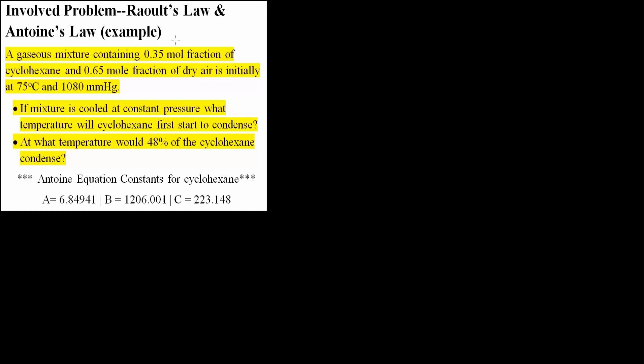In this video, we will be solving this problem right here. A gaseous mixture containing 0.35 mole fraction of cyclohexane and 0.65 mole fraction of dry air is initially at 75 degrees Celsius and 1080 millimeters of mercury. If the mixture is cooled at constant pressure, what temperature will cyclohexane first start to condense? Also, at what temperature would 48% of the cyclohexane condense?